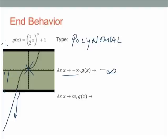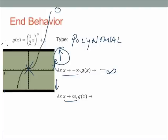Now let's go to the other side. The graph keeps going upward. So if I'm standing way over here as x approaches positive infinity, x getting bigger and bigger, do I have to look up, look down, or is the graph getting close to a number? I would have to look up to see the graph way up there. So as x approaches positive infinity, y or g of x approaches positive infinity. These two directions are different, and that's okay. On a quadratic U-shape, both ends go the same direction, but on a polynomial graph like this cubic, one end goes negative and the other goes to positive infinity.